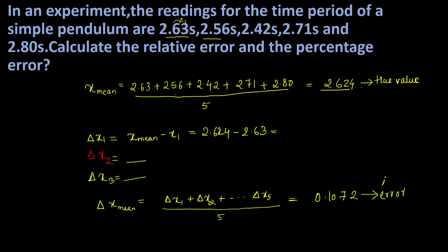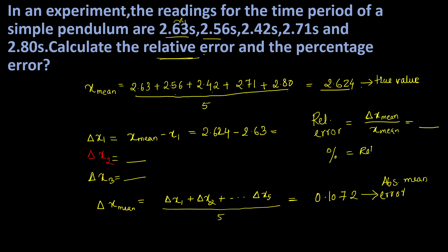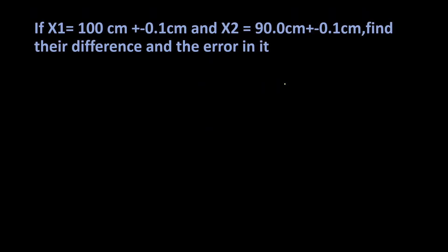We find delta x₁, delta x₂, through delta x₅ as the absolute deviations from the mean. Adding them and dividing by 5 gives the absolute mean error, which is 0.1072. Relative error is delta x̄ divided by x̄. Percentage error is relative error multiplied by 100.